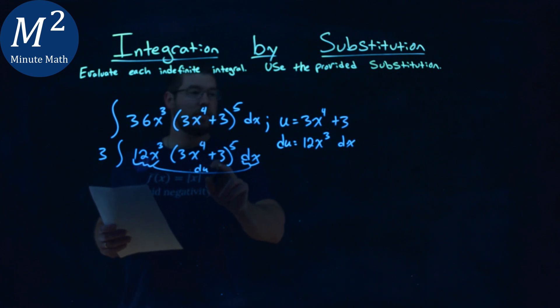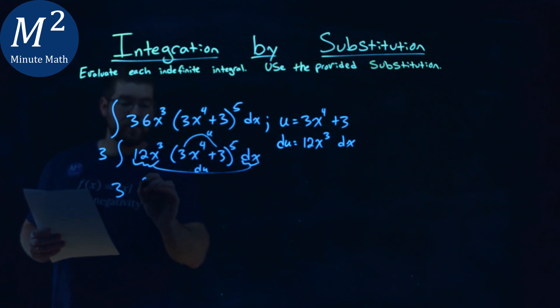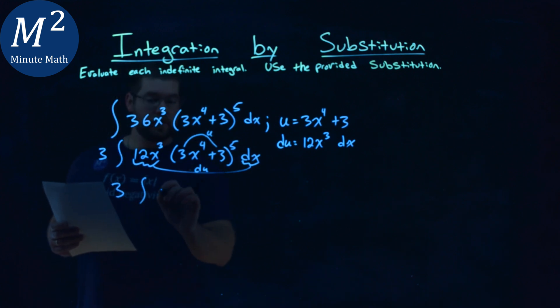And then 3x to the 4th power plus 3 is that u value. So we can rewrite this integral to be 3 times the integral of u to the 5th power du.